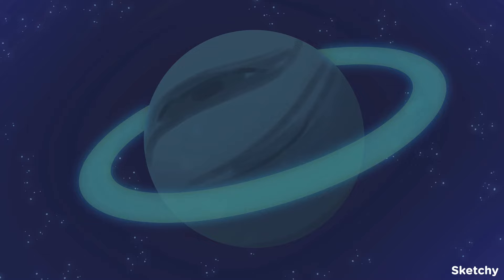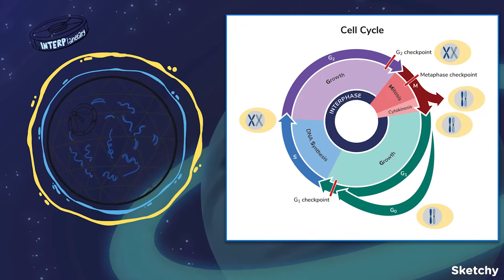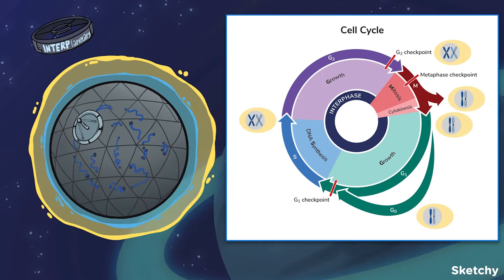Before we dive into the individual stages of mitosis, here's a brief recap of the cell cycle. The cell cycle has two main parts, interphase and the mitotic phase, consisting of mitosis and cytokinesis.